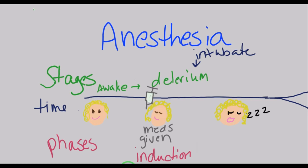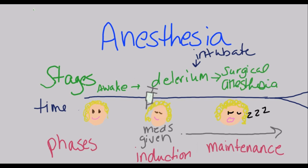Right after delirium, the patient moves into the surgical anesthesia plane. At this point they lose their ability to breathe on their own, lose their protective reflexes, and become relaxed. Just before this transition, we intubate the patient so we can breathe for them — especially if a neuromuscular blocking agent has been given, which prevents movement of the diaphragm and stops independent breathing.